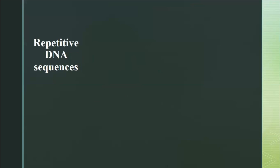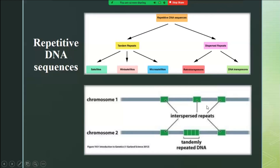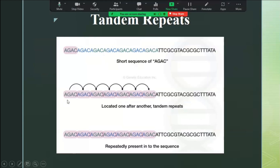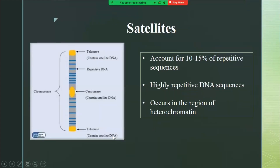The structure of the genome has unique sequences but also has repetitive DNA sequences. These repetitive DNA sequences can either be dispersed throughout the genome or they can be in tandem. Tandem repeats are arranged one after the other. They are divided into satellites, mini satellites, and microsatellites. For example, a triplet or a quadruplet — four repeats arranged one after the other repeatedly present in a sequence — we call it tandem repeats.